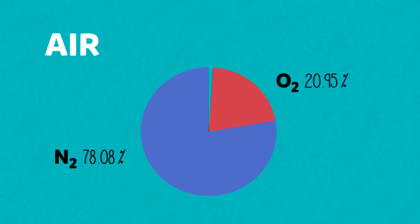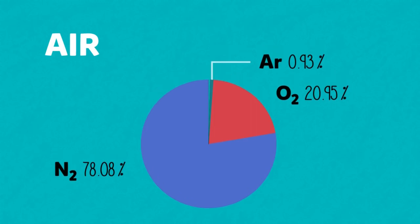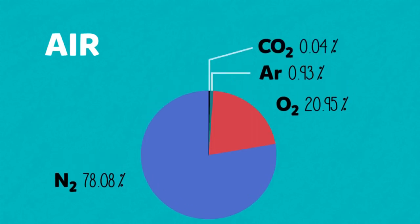The approximate composition of the air today is 78.08% nitrogen, 20.95% oxygen, 0.93% argon, 0.04% carbon dioxide and between 0 and 4% water vapour.